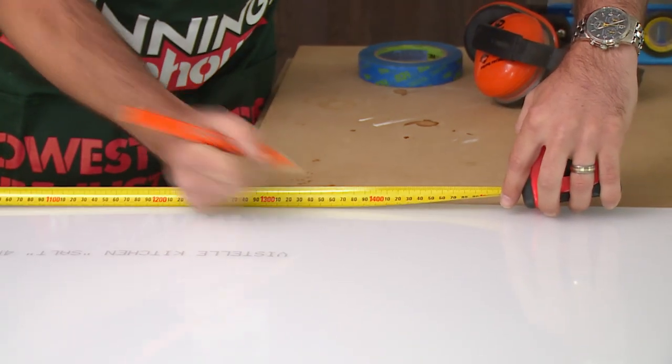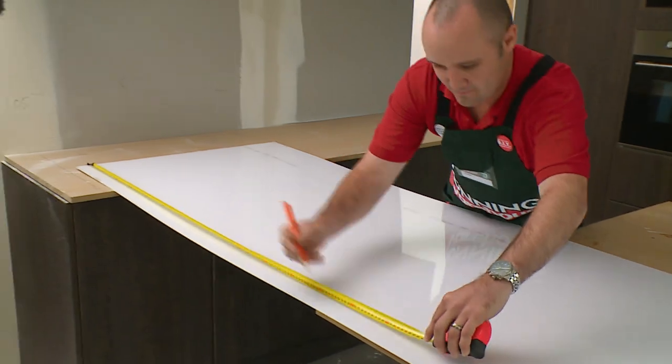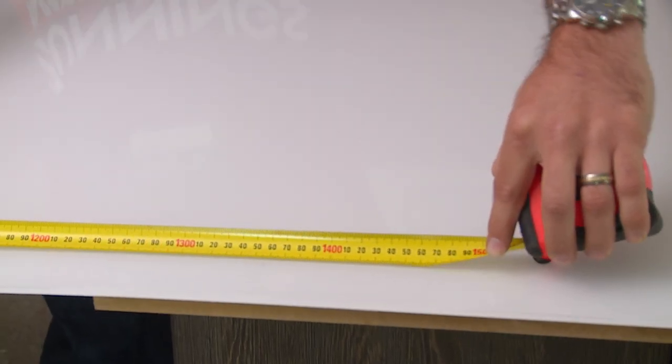I've measured the splashback and worked out that it's not quite long enough to be one whole piece. I will now have to work out exactly where the join can go and that's a very easy process.